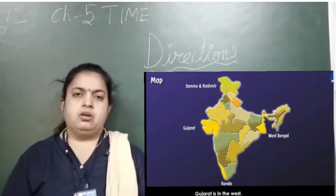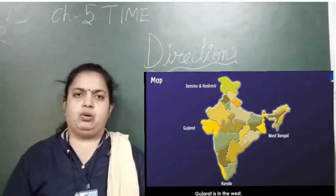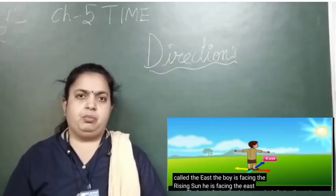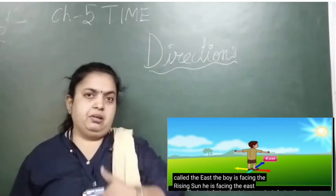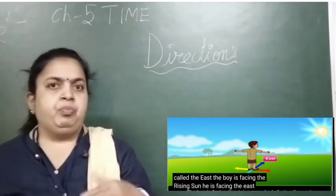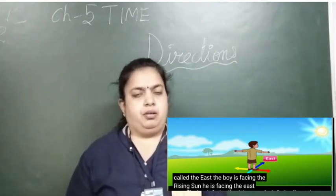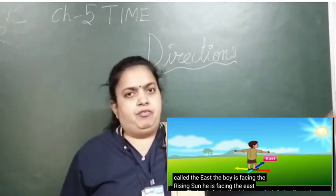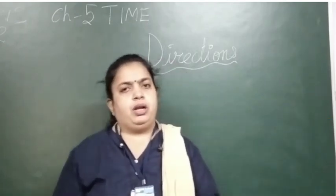So by this you come to know about the directions. You can see the boy — if you stand like this, when you face the sun, that is the east, and the back is the west, the right hand side is the north, and the left hand side is the south.